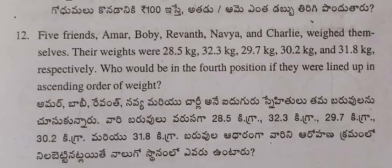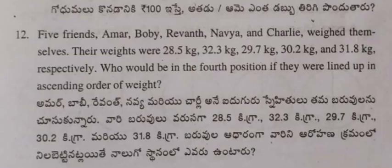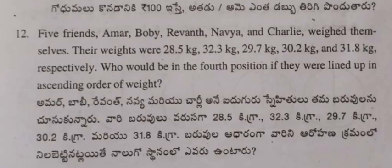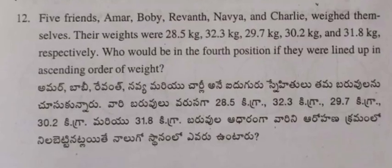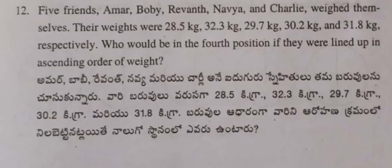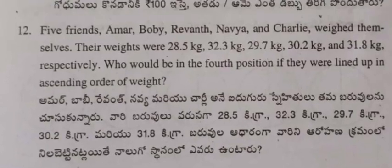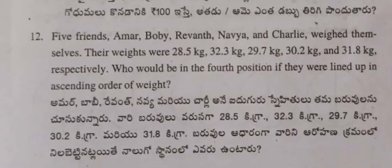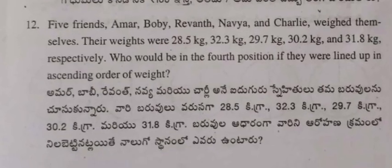Question 12: Five friends — Amar, Bobby, Raven, Navya, and Charlie — weighed themselves. Their weights were 28.5 kg, 32.3 kg, 29.7 kg, 30.2 kg, and 31.8 kg respectively. Who would be in the fourth position if they were lined up in ascending order of weight?